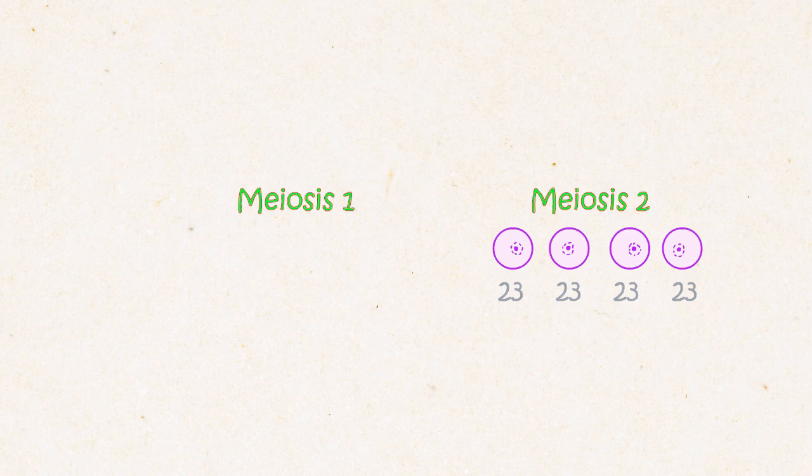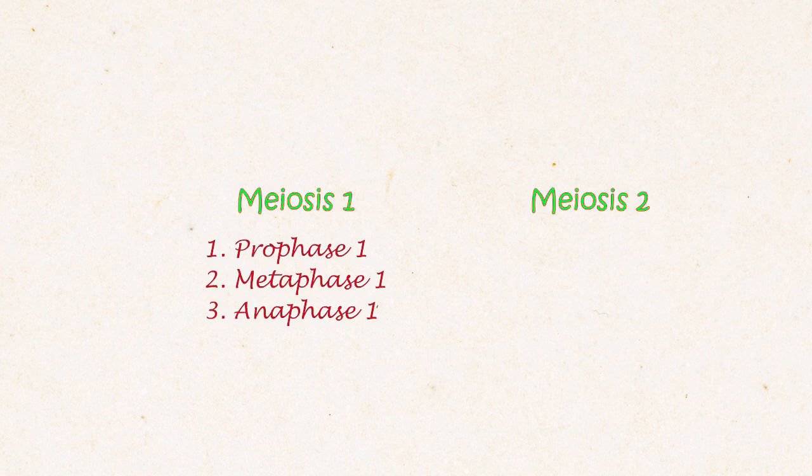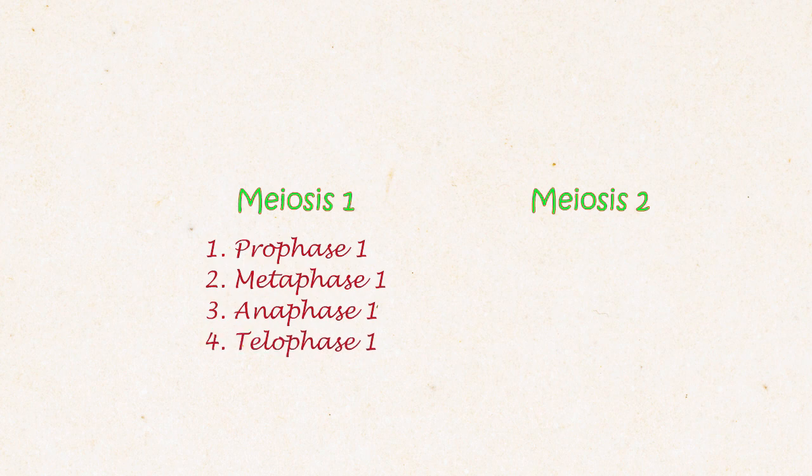Meiosis 1 has four phases of its own. Prophase 1, Metaphase 1, Anaphase 1 and Telophase 1.